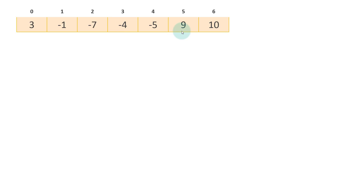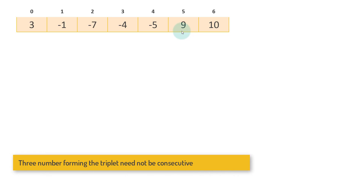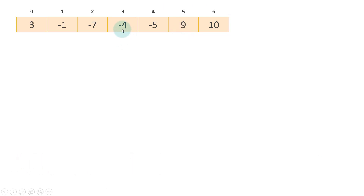One important thing to understand is that the problem doesn't give us a constraint that the three numbers must be consecutive. We are free to choose any numbers from any position in the array, as long as the sum equals zero. There are some problems where consecutive numbers are required, but that is not the constraint here.